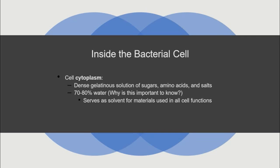If we think about the inside of the bacterial cell, we need to talk about two things: the cell cytoplasm and the genetic component — the bacterial chromosome. The cell cytoplasm is a dense solution of sugars, amino acids, and salts, composed of mostly 70 to 80% water. It serves as a solvent for materials used in cell functions like proteins, amino acids, sugars, and salts.